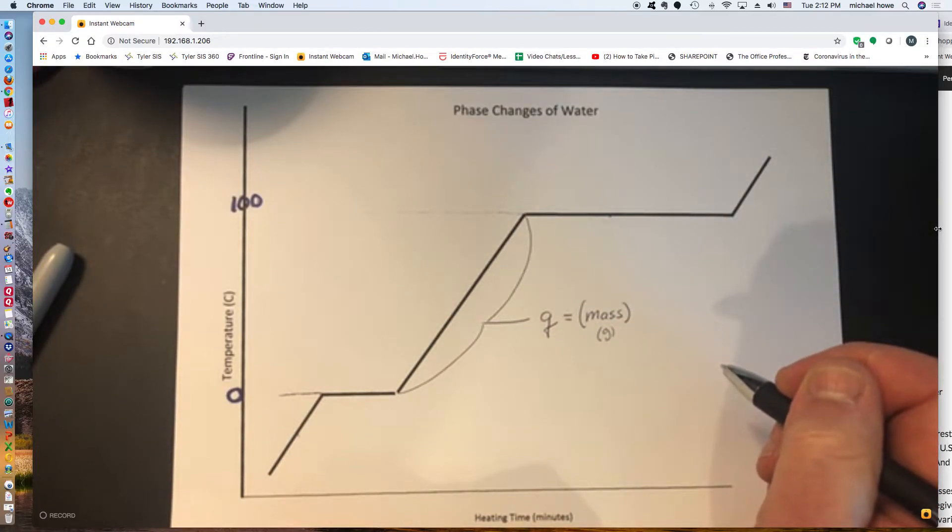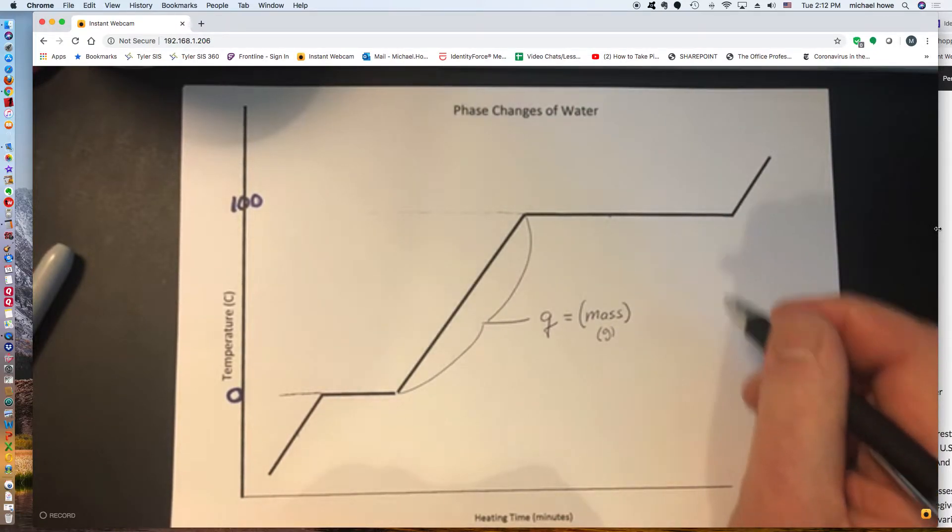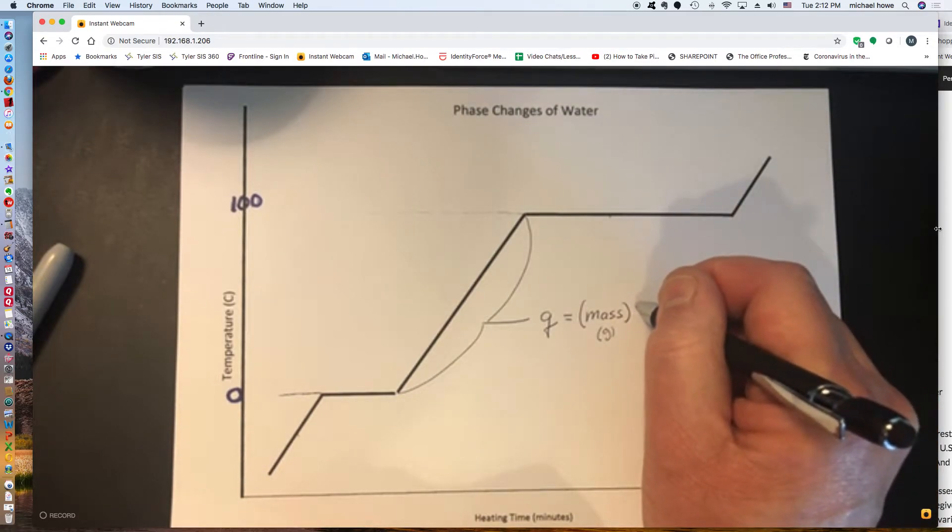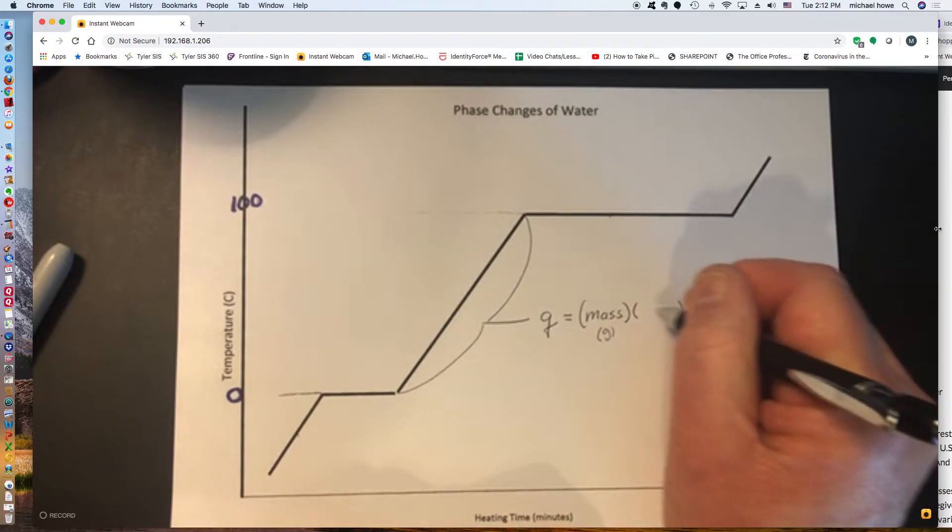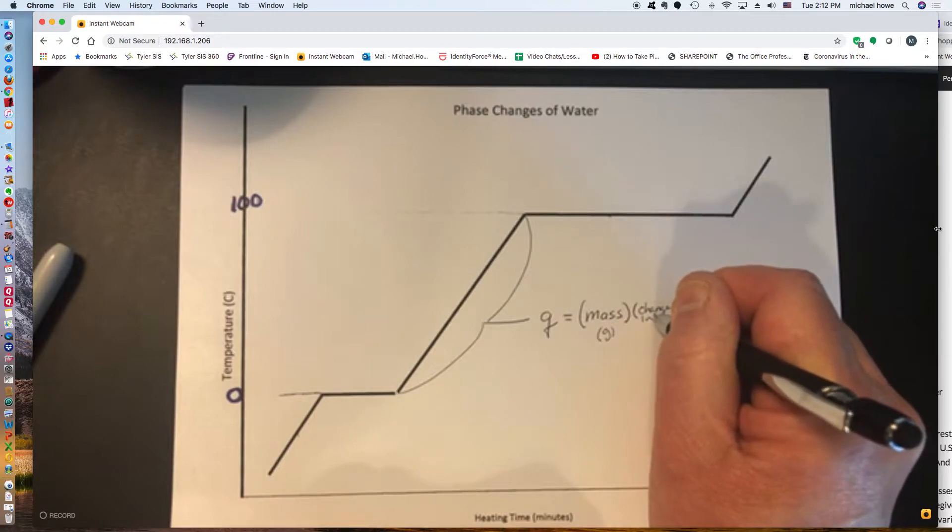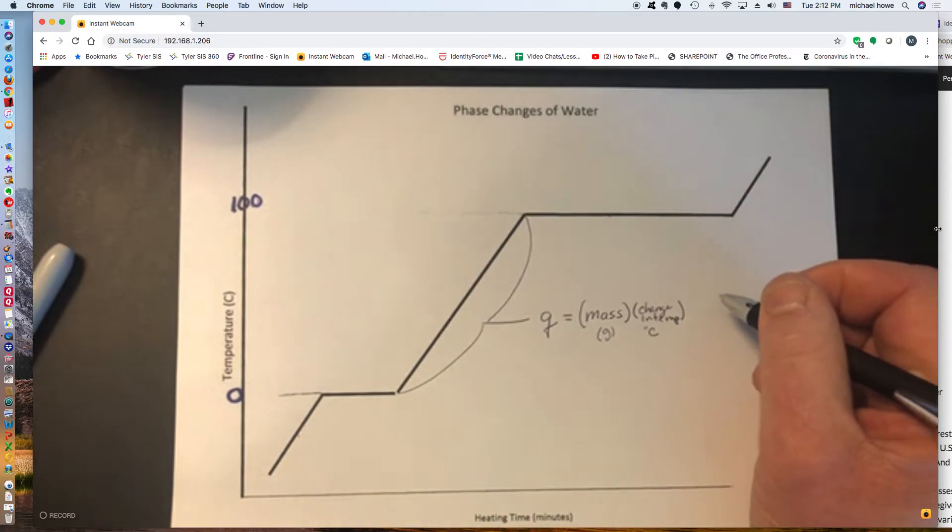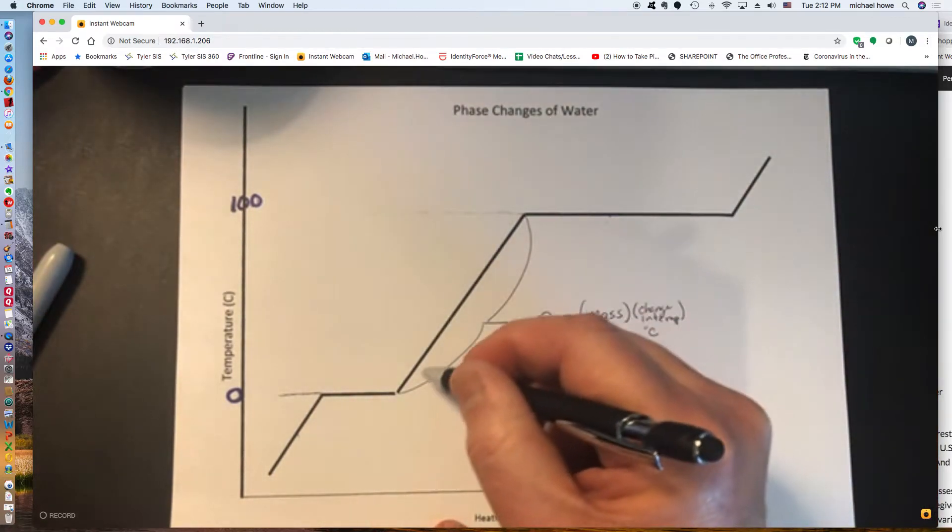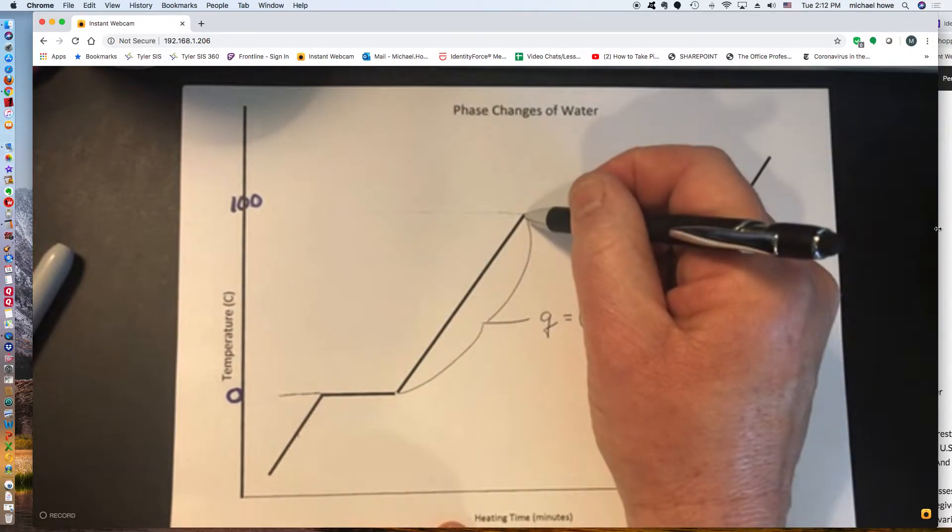The second factor that I'm going to bring up, and I'll usually write this factor last in the equation, but I'm going to talk about it secondly because it's easier to understand, is the change in temperature. The change in temperature will be written in degrees C. And the change in temperature in this case for the section that I've outlined would be 100 degrees because you're starting at zero, going to 100.